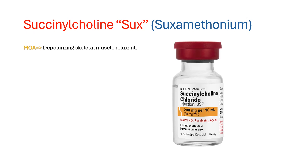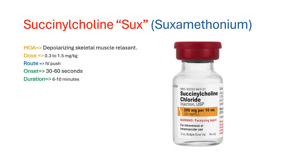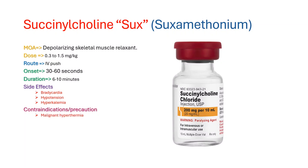Succinylcholine is administered at a dose of 0.3 to 1.5 mg per kg IV push, with an onset of action of 30 to 60 seconds and a duration of action of 6 to 10 minutes. Side effects include bradycardia, hypertension, and hyperkalemia. Succinylcholine is contraindicated in patients with a personal or familial history of malignant hyperthermia. Certain health conditions can cause upregulation of acetylcholine receptors, resulting in life-threatening hyperkalemia.